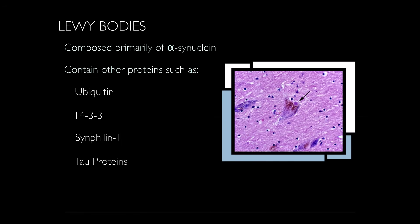These cytoplasmic inclusions are made primarily of alpha-synuclein, but may also contain other proteins such as ubiquitin, 14-3-3, and tau.